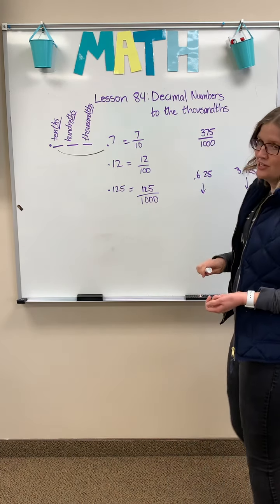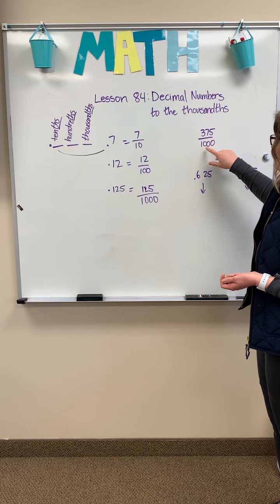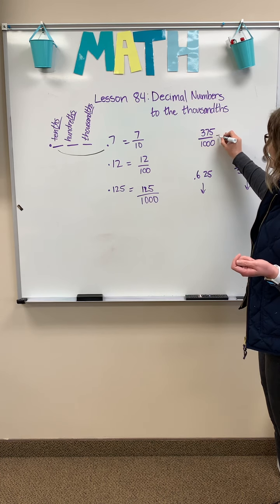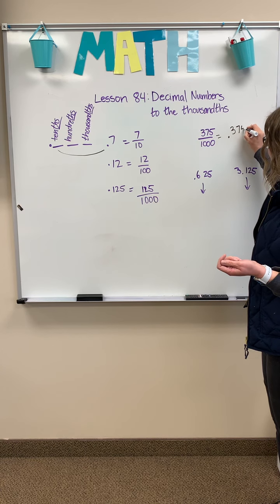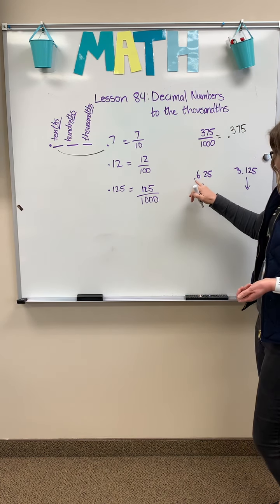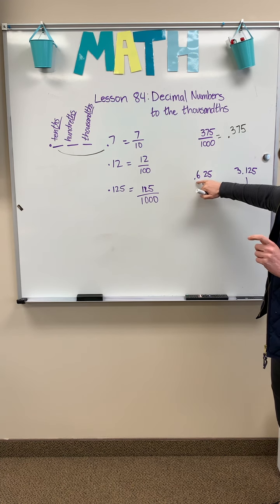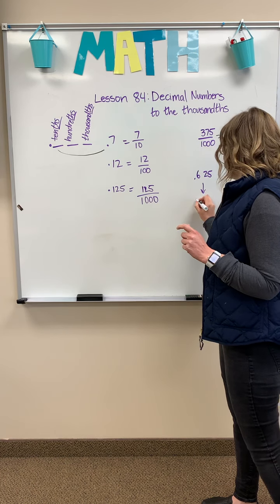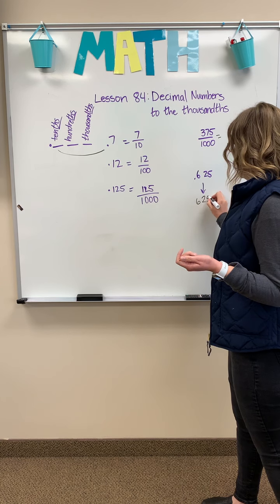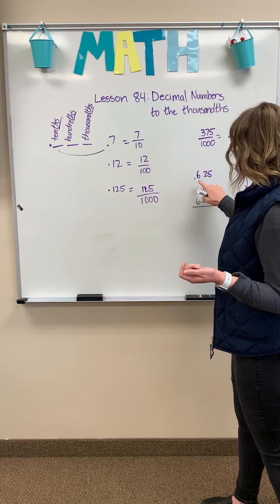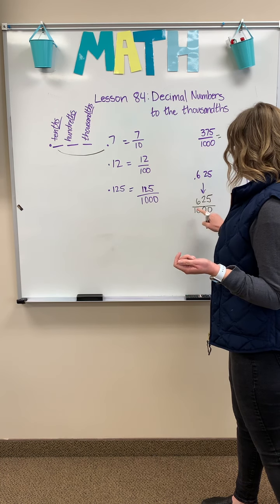Let's do a little practice. We have three hundred and seventy-five over one thousand, and we show this as three hundred and seventy-five thousandths. We'll also practice writing them. Here is another decimal number, and if we were to write this as a fraction we would write six hundred and twenty-five over one thousand — because we have three place values, we have three zeros.